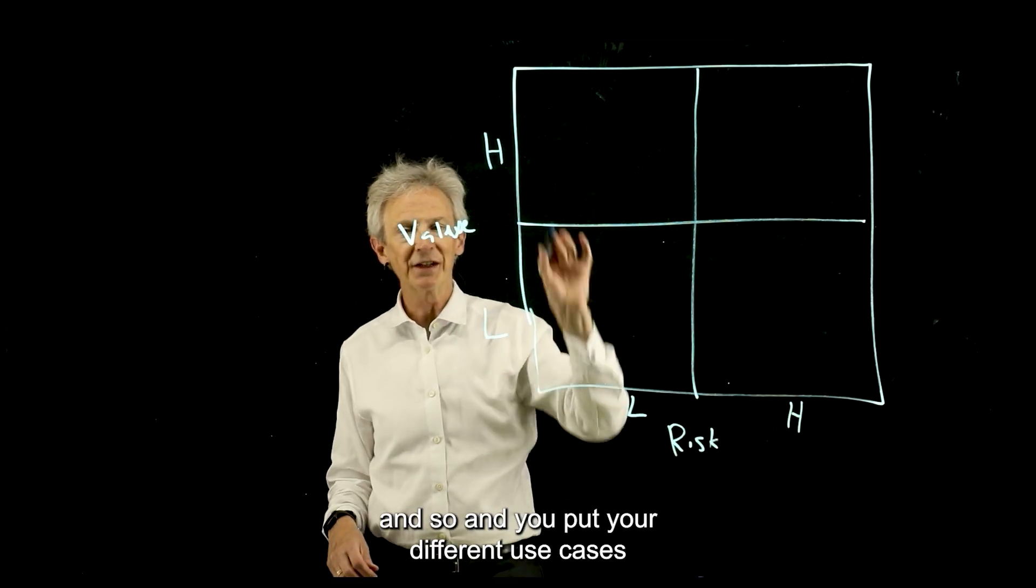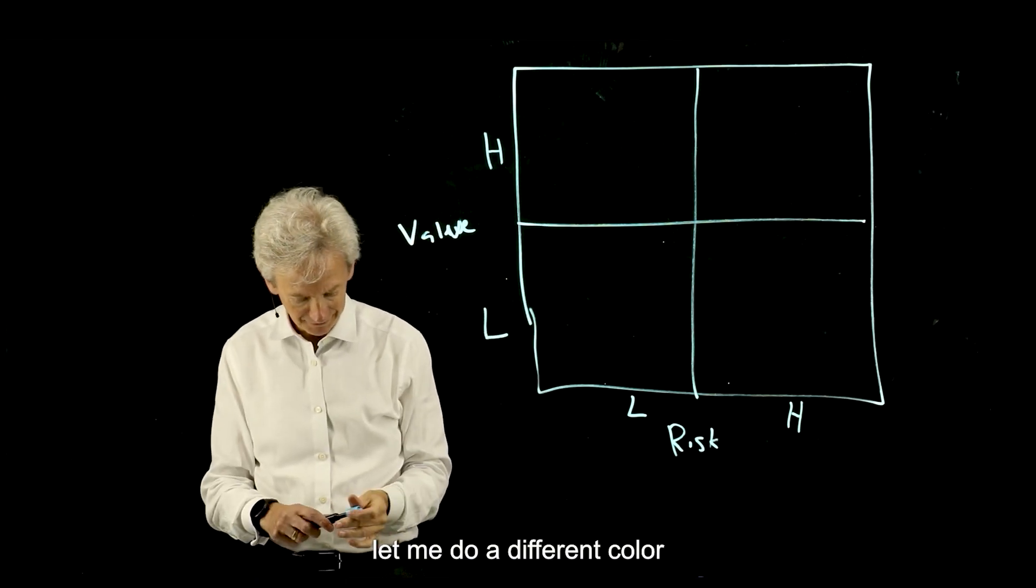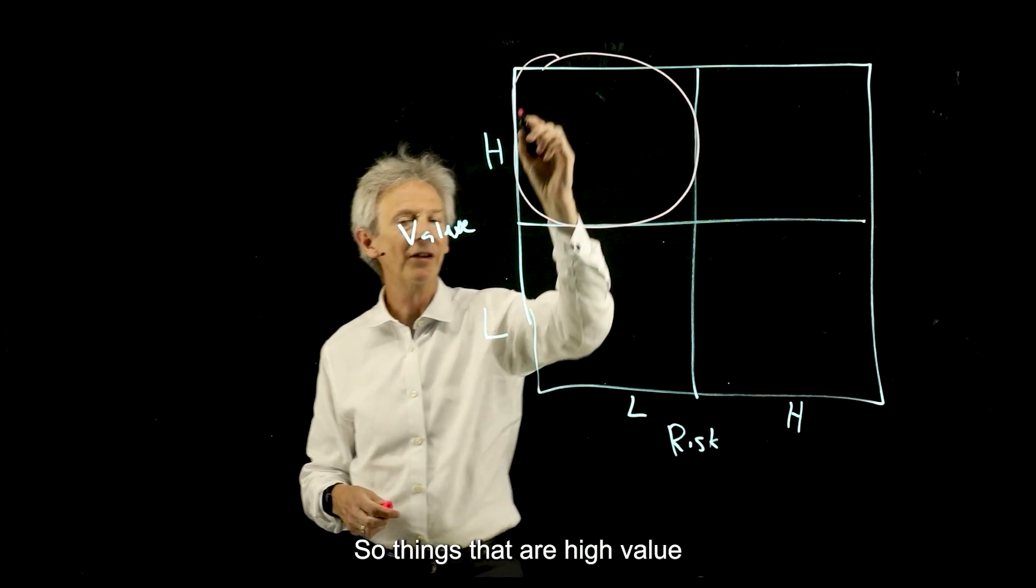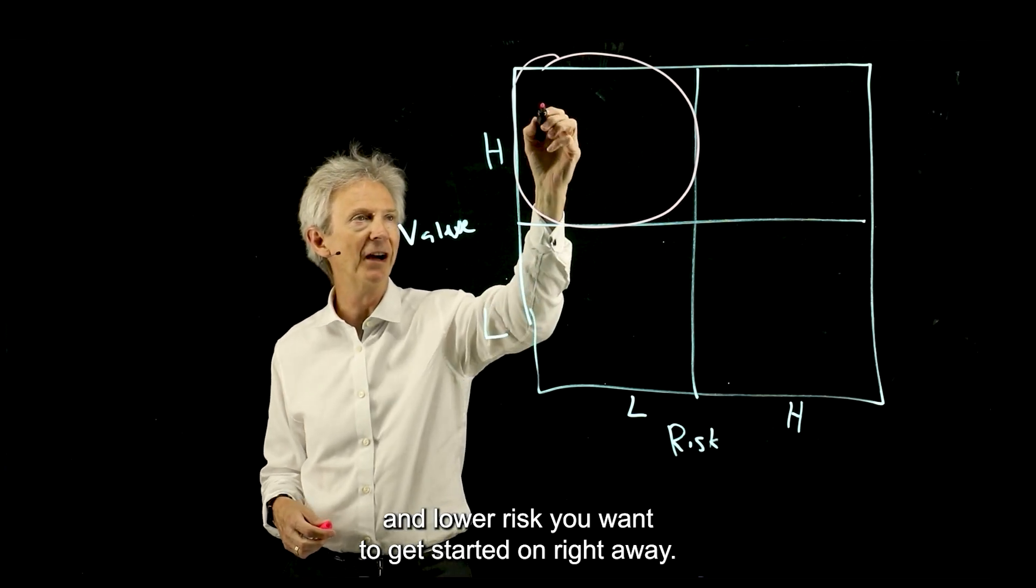You put your different use cases into this four-blocker. As you can imagine, this is your good quadrant. Things that are high value and lower risk, you want to get started on right away.